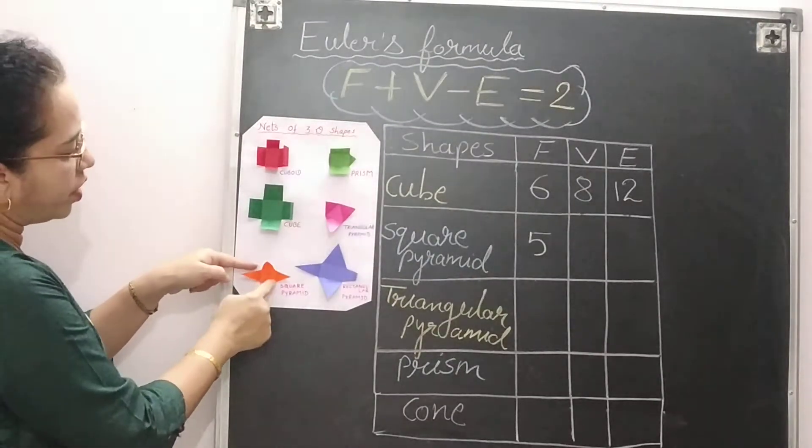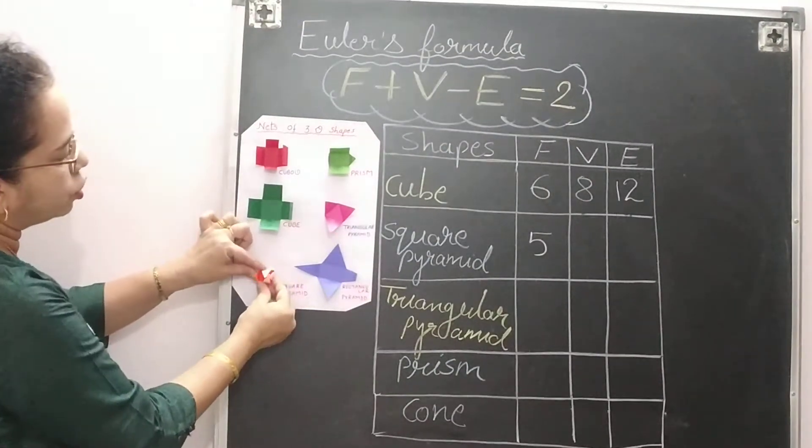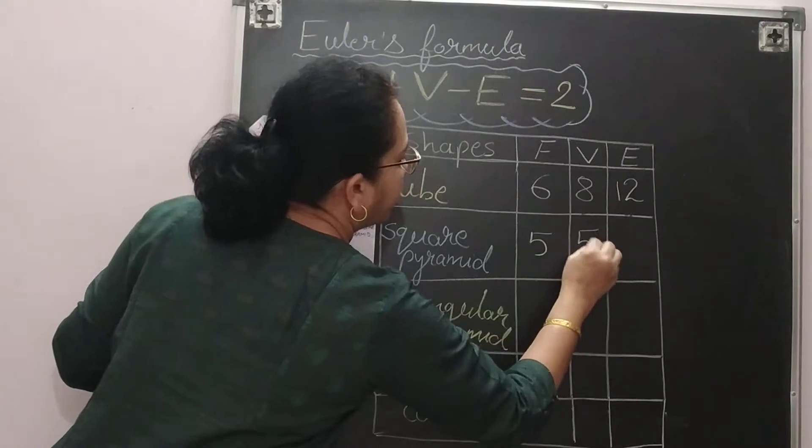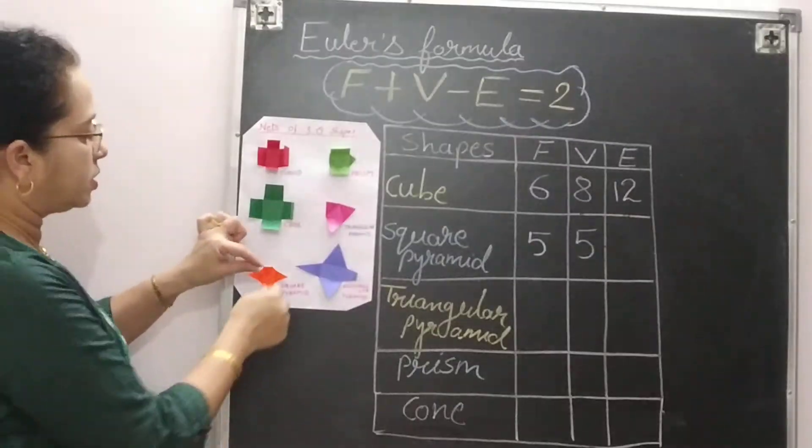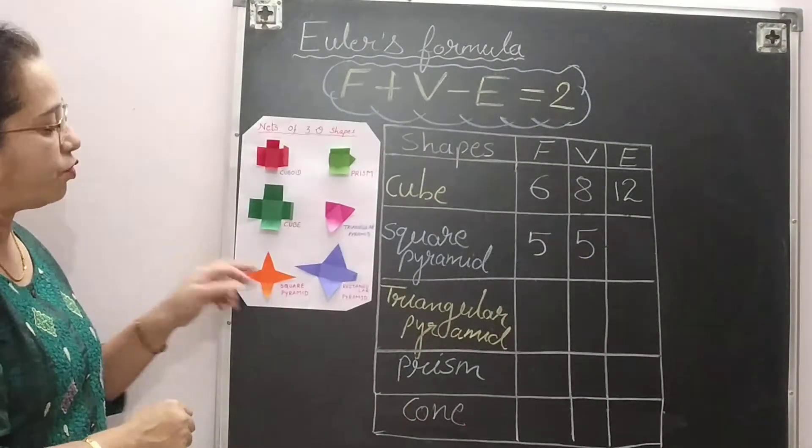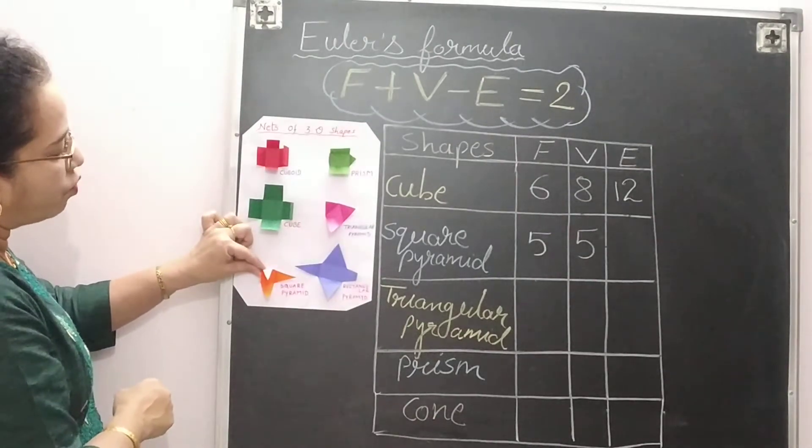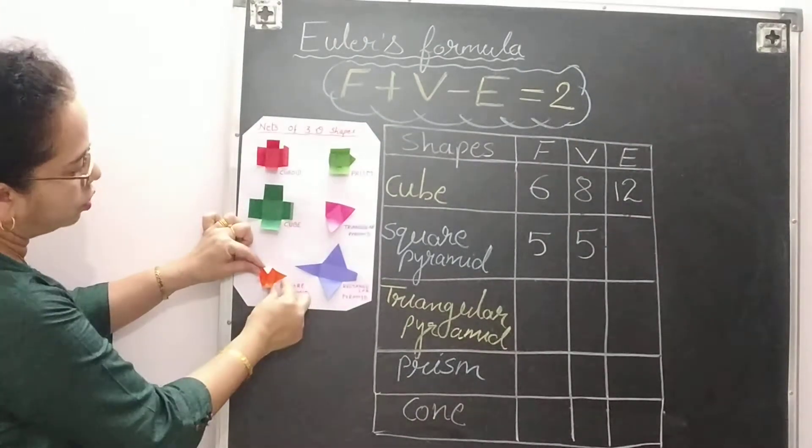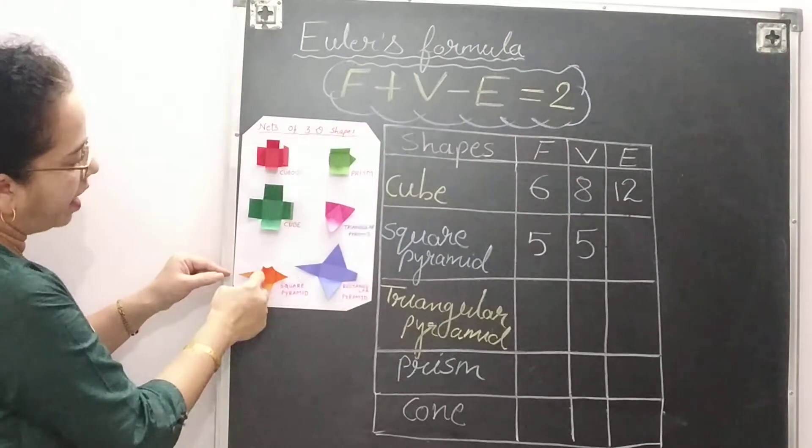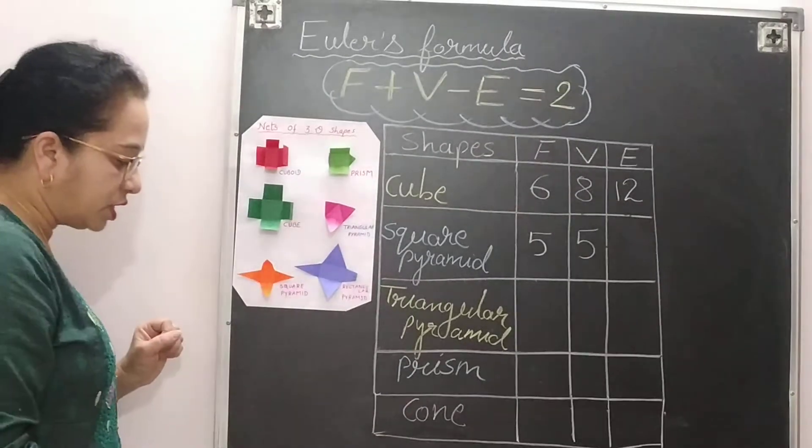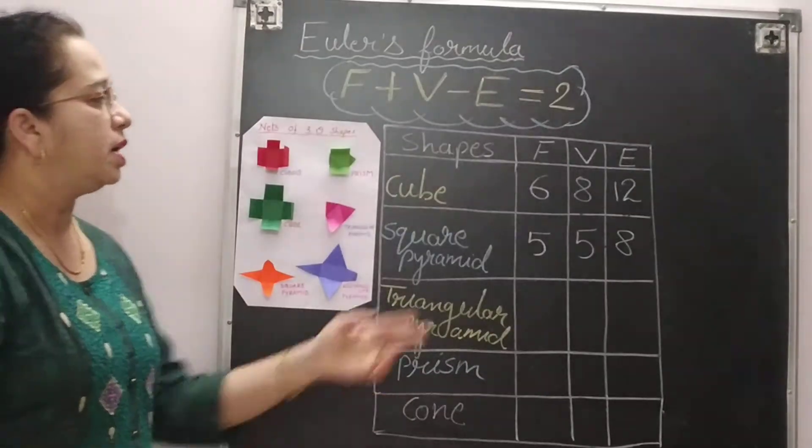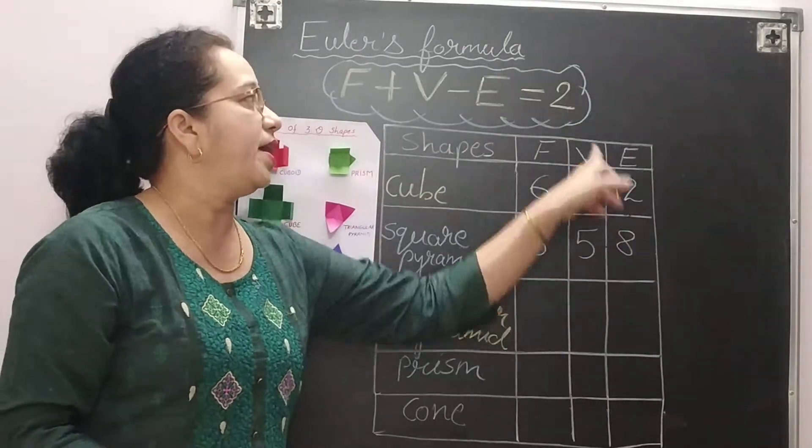Vertices. For the square you are getting these 4 vertices and this top one you will get 1. So 4 plus 1 will give you 5 vertices. Now how to count edges. For this square these 4 creases are there. So these are the 4 edges. Now this will give you 1, this will give you 2, this will give you 3 and this will give you 4. So 4 edges upside and 4 edges at the base. So 4 plus 4 will give you 8. So a square pyramid has 8 edges. So again 5 plus 5, 10 minus 8 you will get 2.